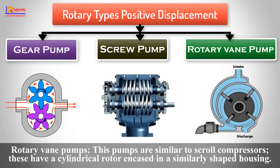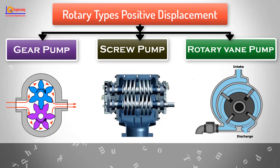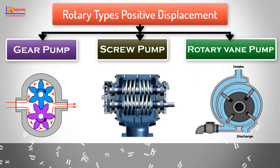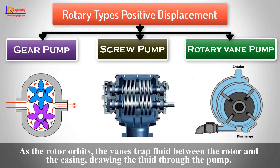Rotary Vane Pumps are similar to scroll compressors. These have a cylindrical rotor encased in a similarly shaped housing. As the rotor orbits, the vanes wrap fluid between the rotor and the casing, driving the fluid through the pump.